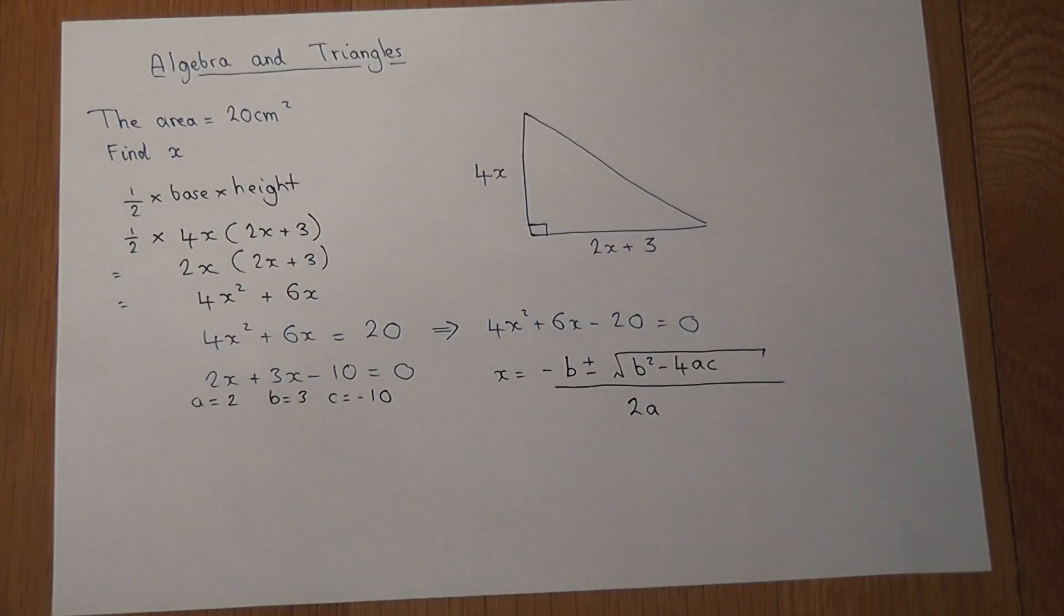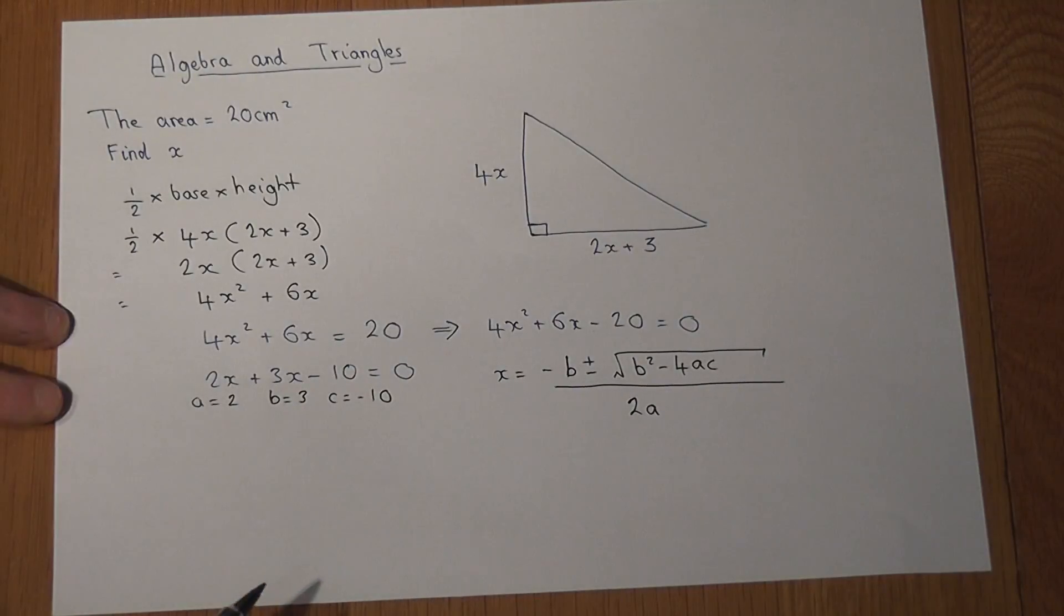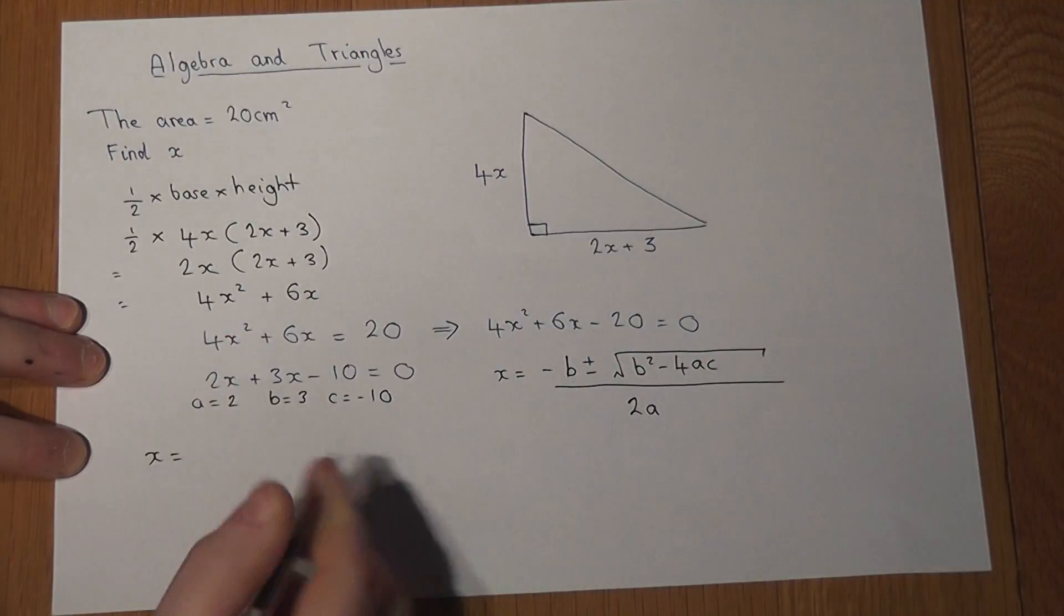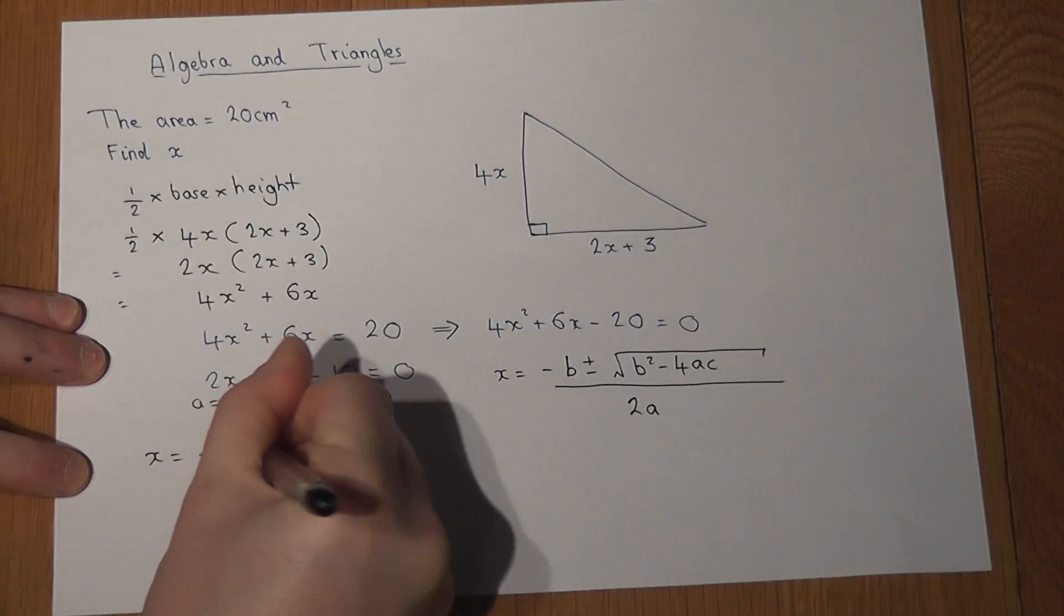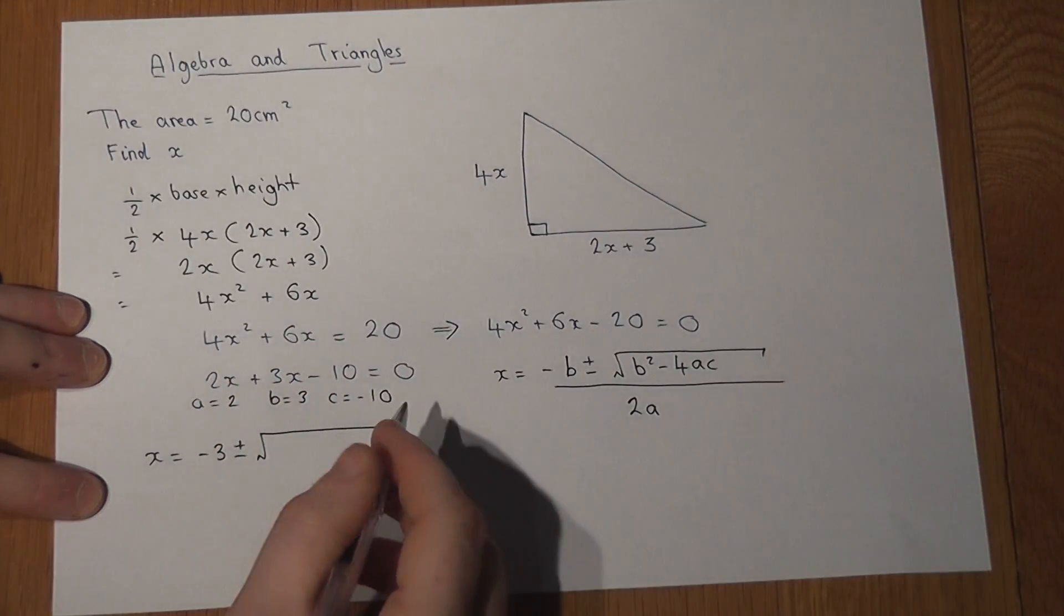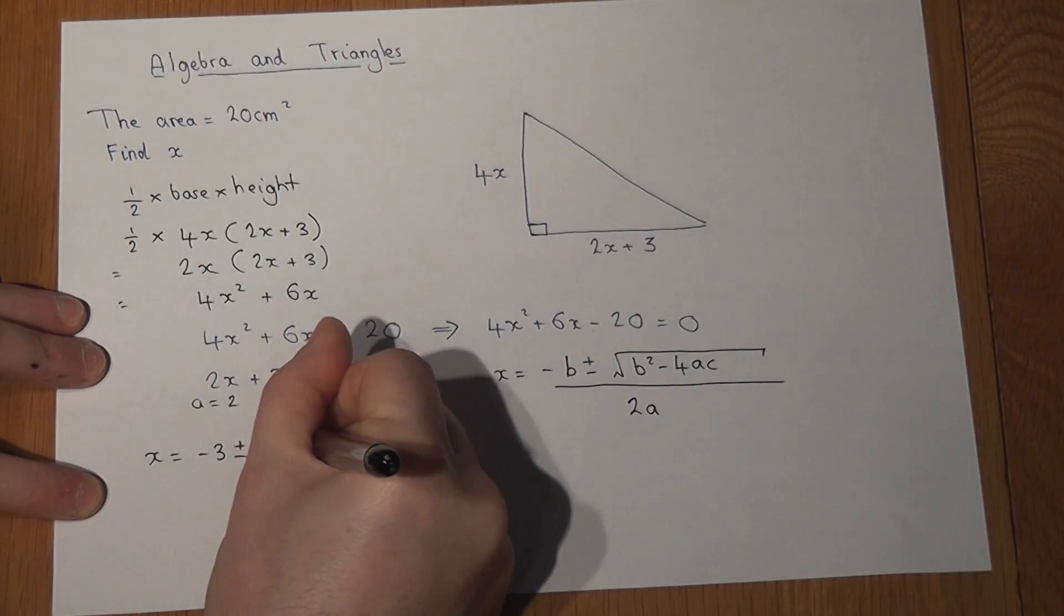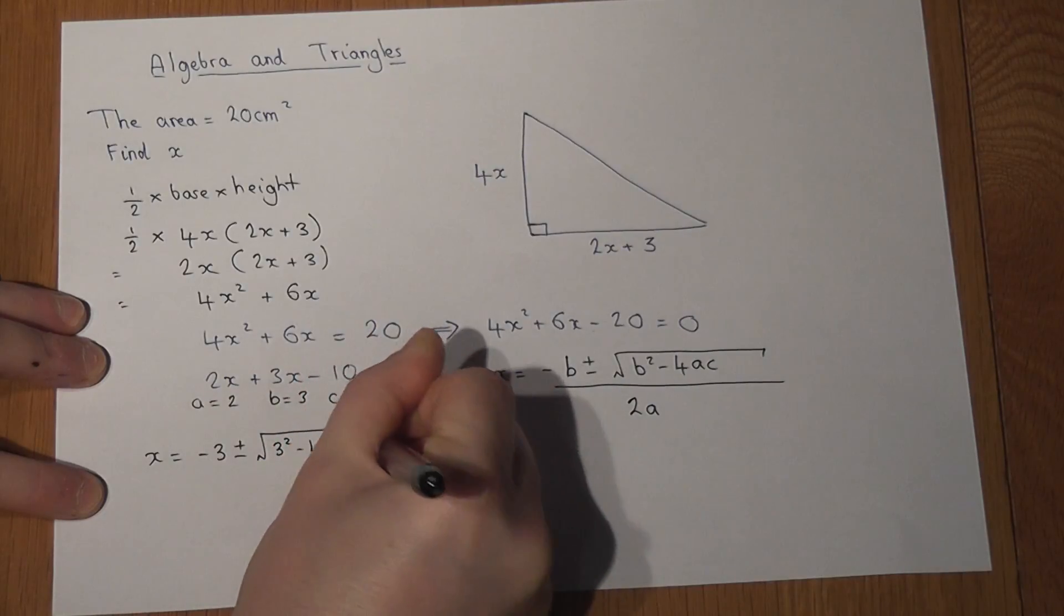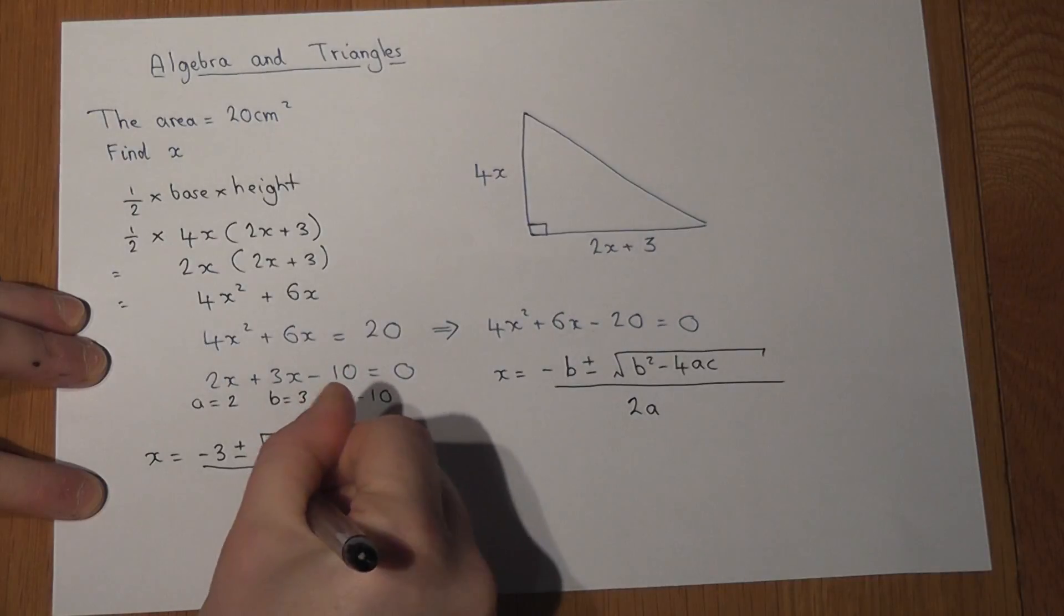So I need to sub my numbers 2, 3, and minus 10 into that formula there. So in this case, my values of x could be x equals minus 3 plus or minus. Now my advice is write out the entire thing carefully with the numbers in. So 3 squared minus 4 times a times c, all over 2 lots of a.